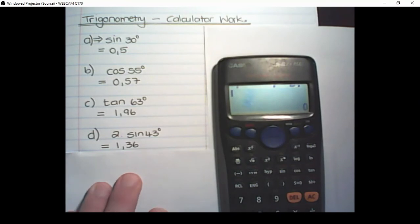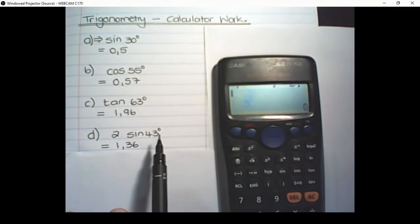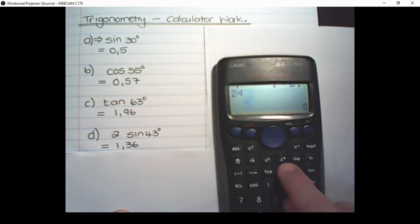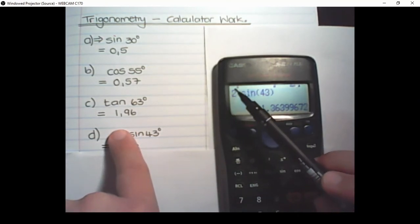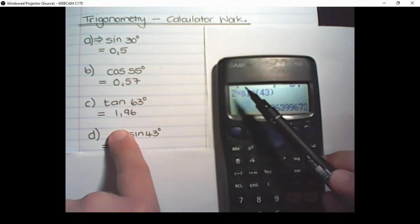The next one is not tricky, but we have 2 times the sine of 43 degrees. So this is 2 times sine of 43. Close the bracket. The answer is 1.36. So when it's written with a number in front we simply multiply that value with the trigonometric ratio.